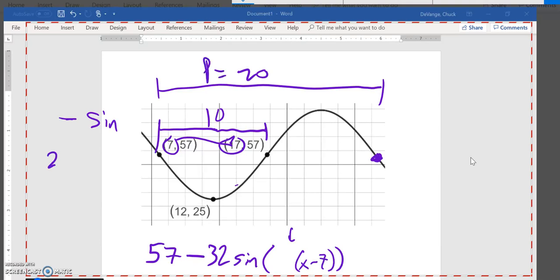So knowing that, if I go 2π divided by 20, which is π over 10, so there's my multiplier, π over 10. And there is my equation.